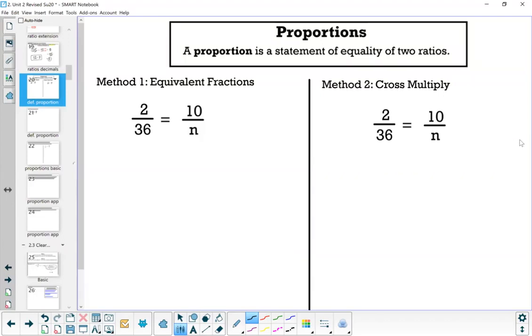The definition for proportion, it says, a proportion is a statement of equality of two ratios. So I gave you an example here. This proportion, 2 over 36 equals 10 over N.